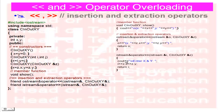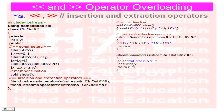Next, for keyboard input, the return type is istream reference, using keyword operator with the insertion operator. Parameters are istream reference and CInOutXY reference object. Inside, we use cout to prompt 'enter x and y', then istream >> z.x >> z.y, and return the istream object. This completes the body of the insertion and extraction operator overloads.